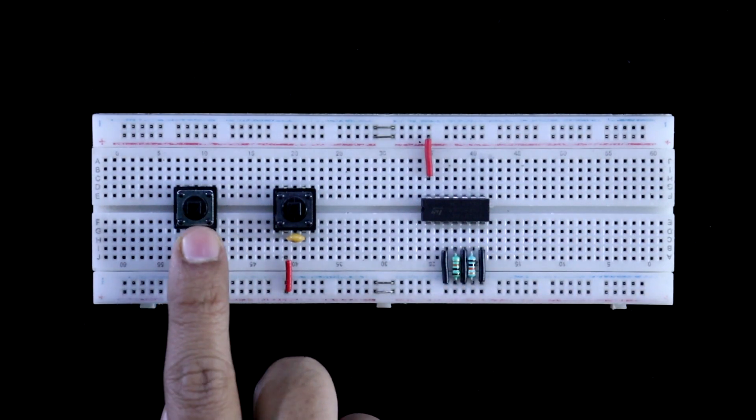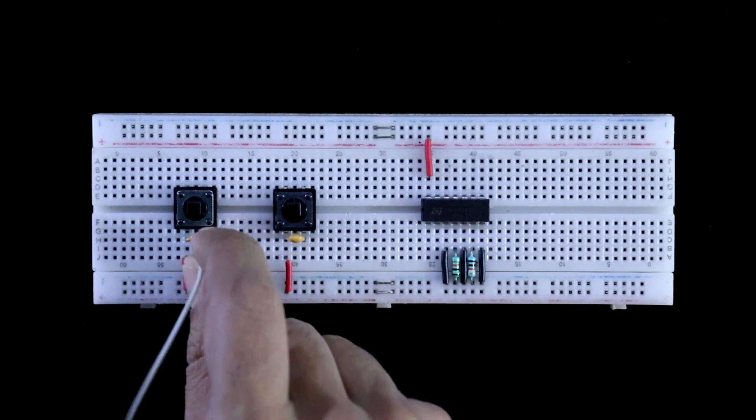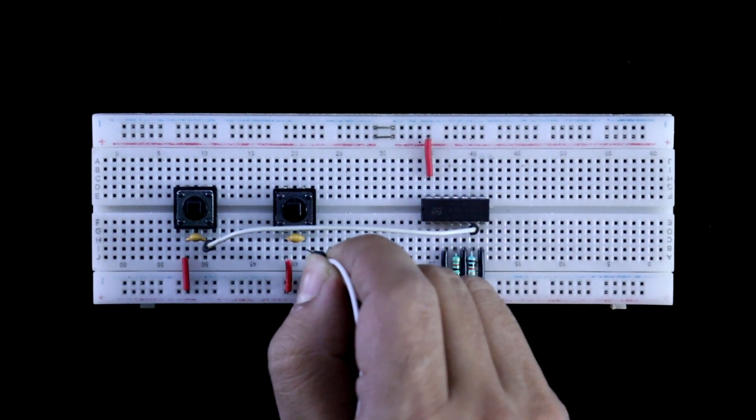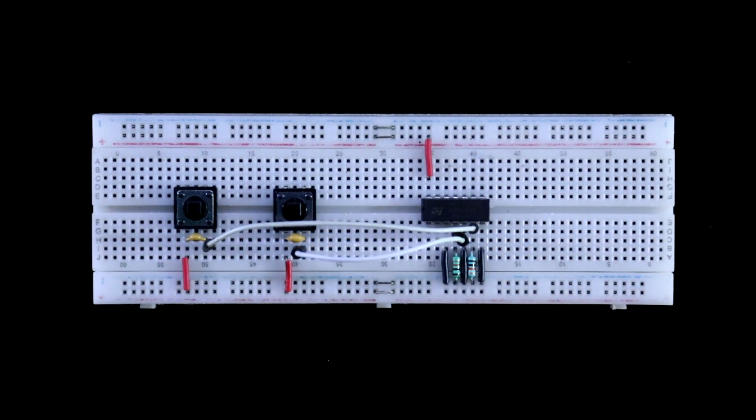With pins 6 and 4 we have to connect pull-down resistors. Let's say this is for ON and this is for OFF. As it is ON, we have to connect this to pin 6, and switch OFF will be connected to pin 4.